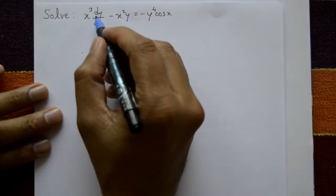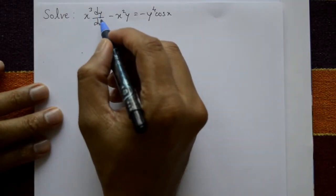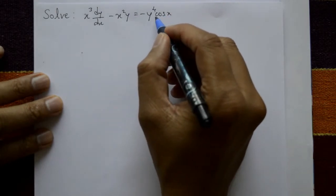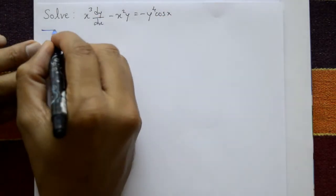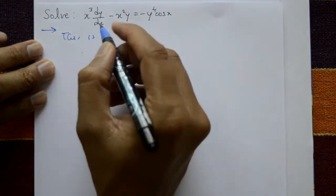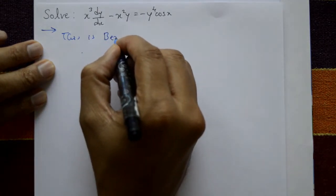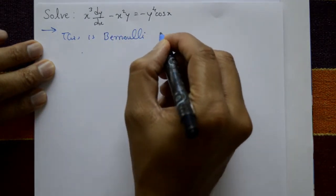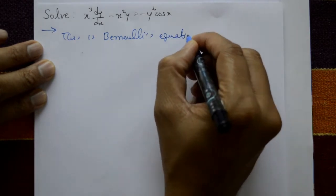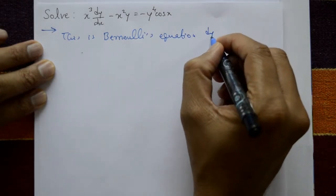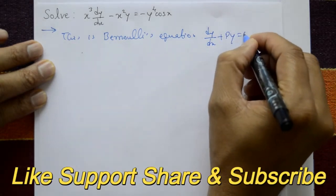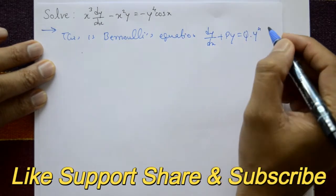Solve x³(dy/dx) minus x²y equals minus y⁴ cos x. This is a Bernoulli's equation. The standard Bernoulli's equation form is dy/dx plus Py equals Q into y to the power n.